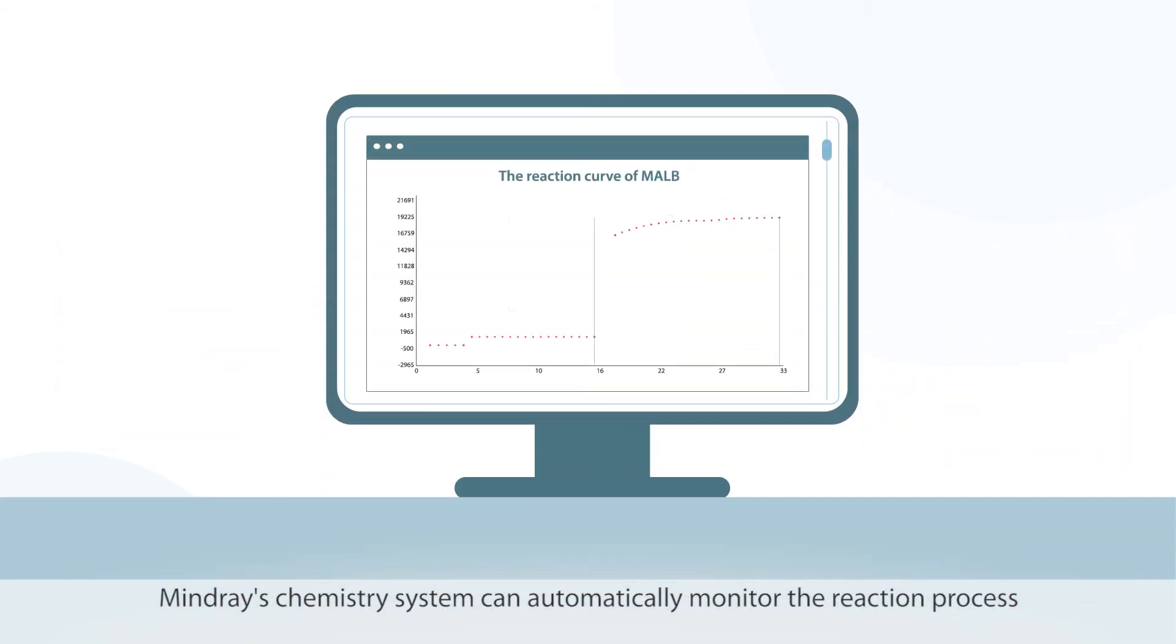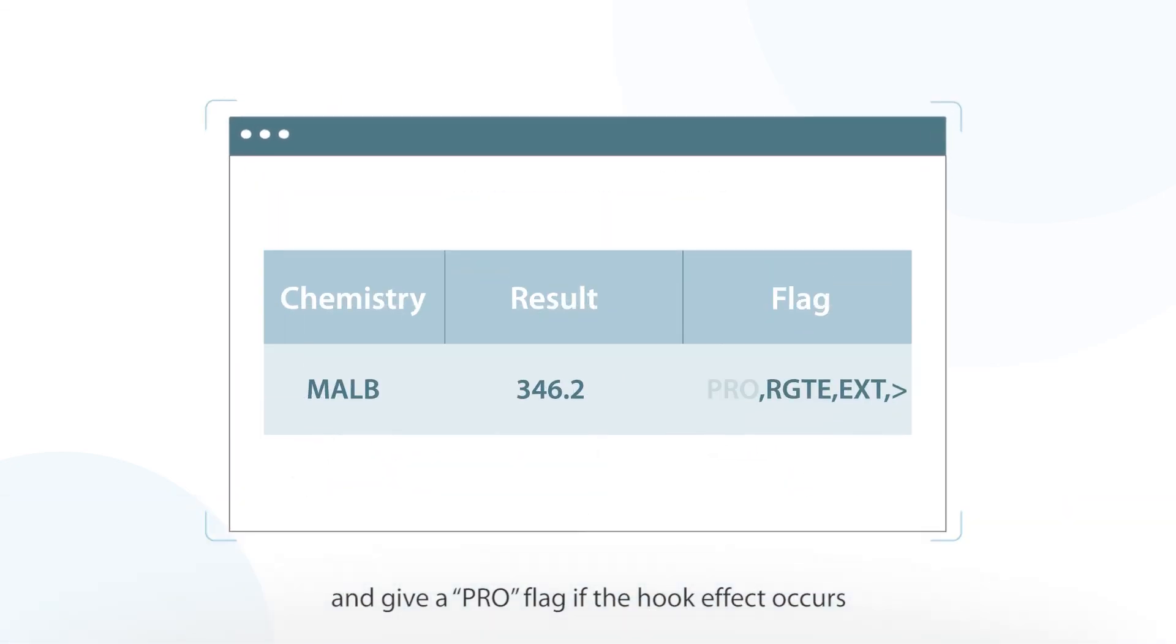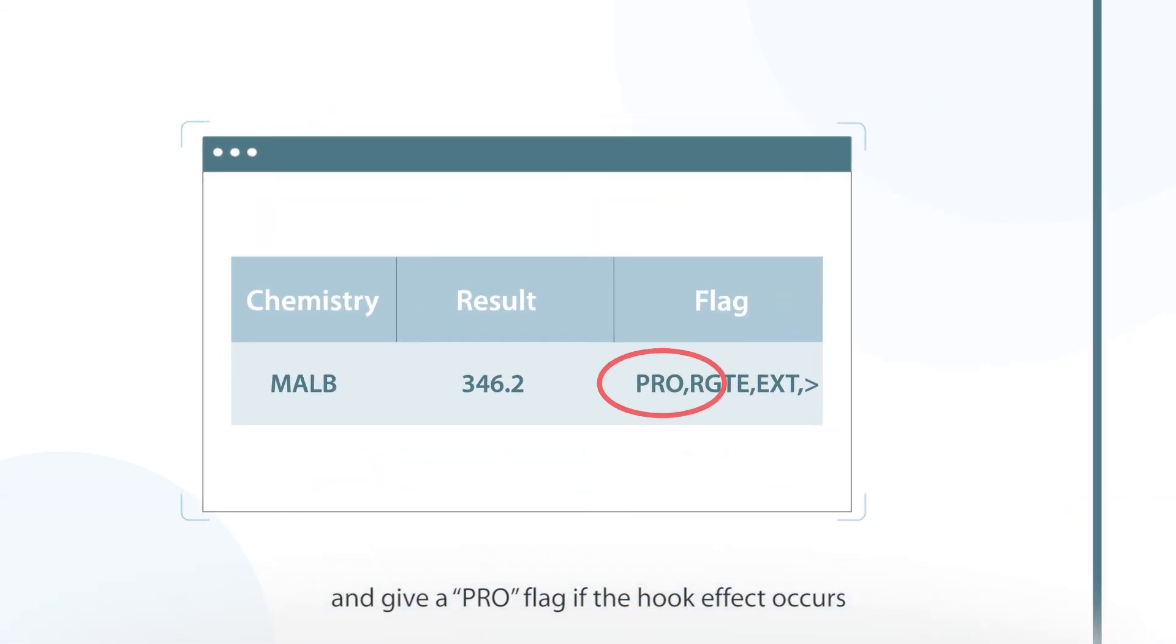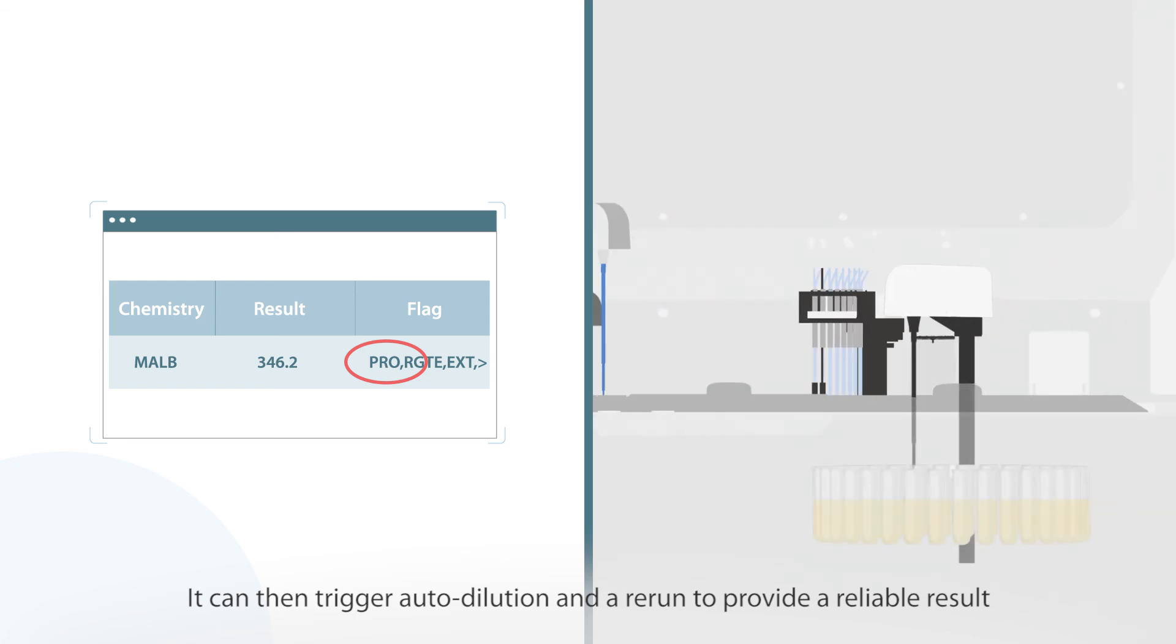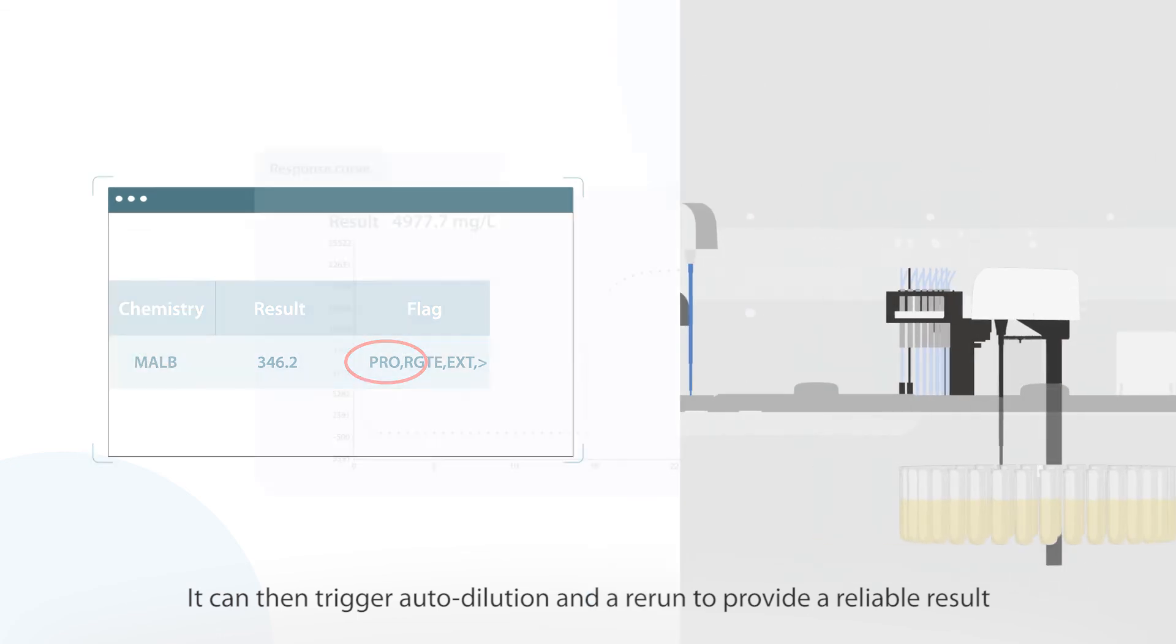MindRay's chemistry system can automatically monitor the reaction process and give a PRO flag if the hook effect occurs. It can then trigger auto dilution and a rerun to provide a reliable result.